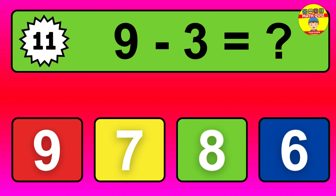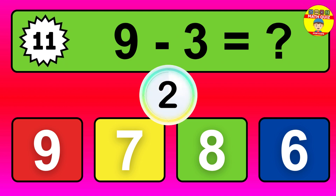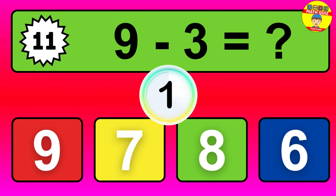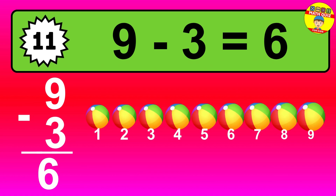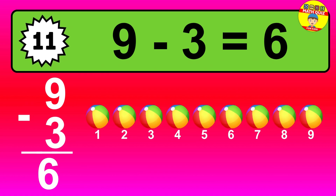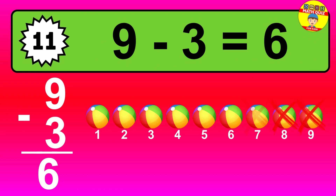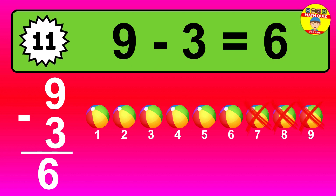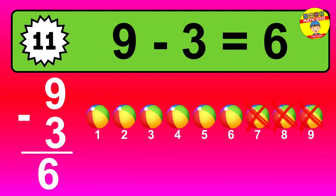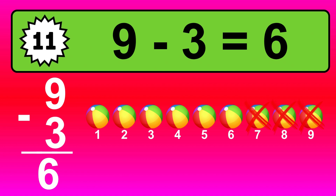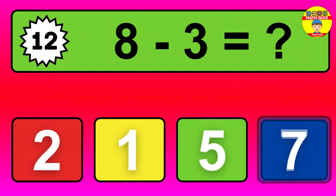Question eleven: nine minus three equals what? The answer is nine minus three is six. Let's count it. One, two, three, four, five, six.